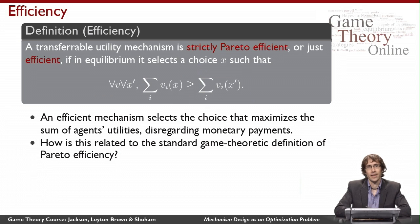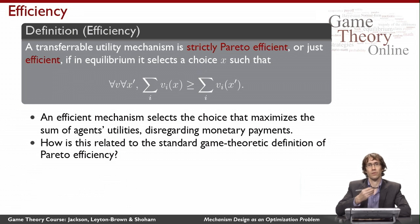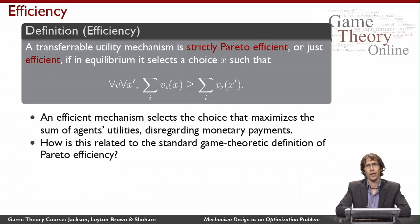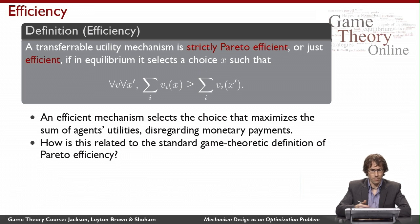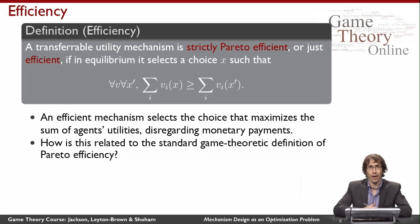A mechanism is efficient if it selects the choice that maximizes the sum of the agents' actual valuations or utilities, disregarding the payments they'll have to make. You might notice that in game theory there's a notion of Pareto efficiency that seems different — it doesn't talk about summing up valuations, but instead says something about not being Pareto dominated by any other cell in the game matrix.